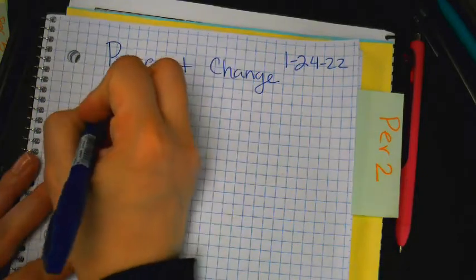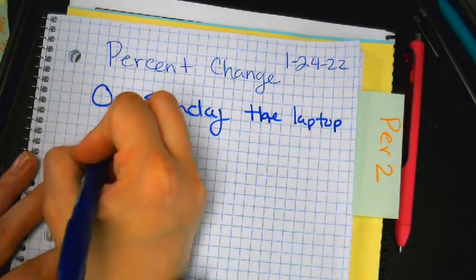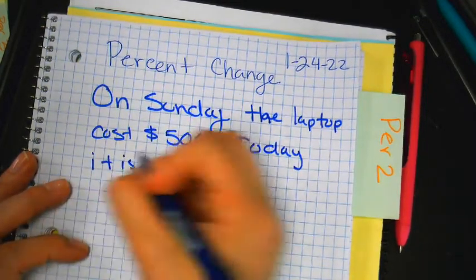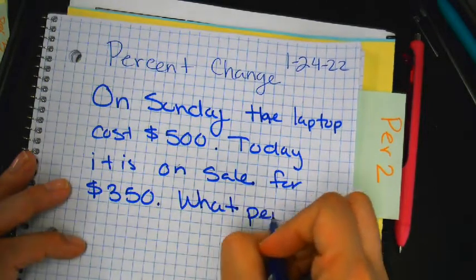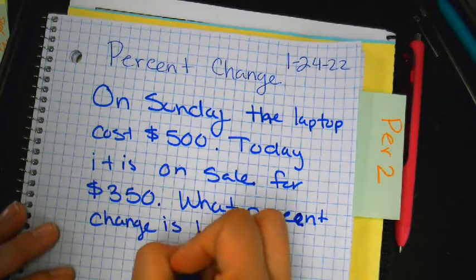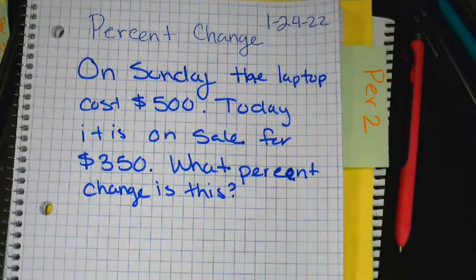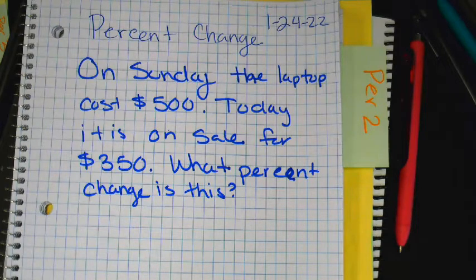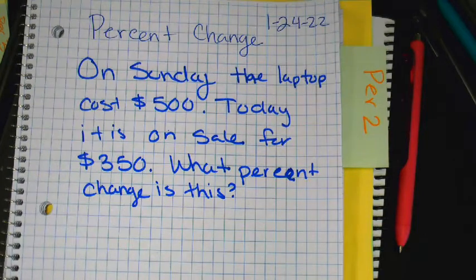So let's begin. On Sunday, the laptop cost $500. Today it is on sale for $350. What percent change is this? Write this down. Different than the problems we did last week because I don't give you the percent. I give you what it used to cost, what it costs now. And I'm asking you, are you saving 50%? Are you saving 20%? What percent am I changing? That's the question I'm asking you.